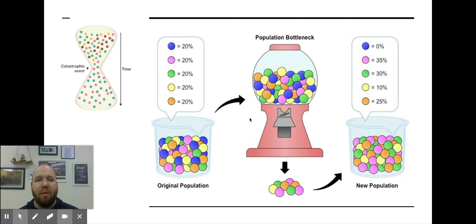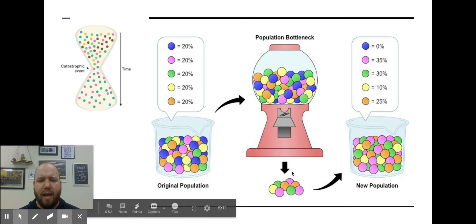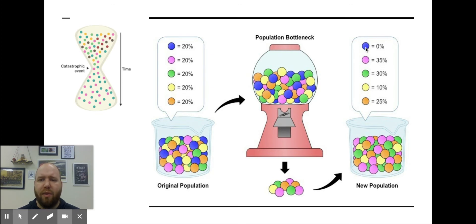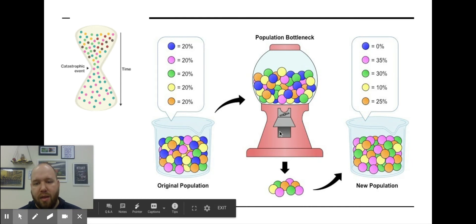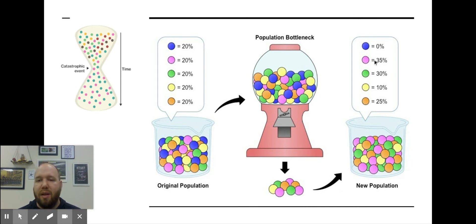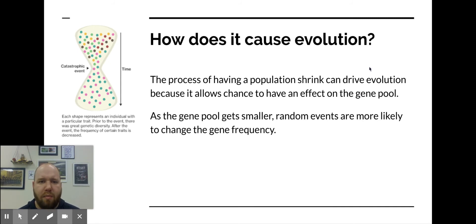The most important thing to remember about shrinking populations is that this is because of random processes. I love this example of gumballs in a gumball machine — they put them all in there evenly, but the ones you get out are by random choice. By random choice, you could miss out on a color or flavor. Some could be overexpressed, some underexpressed, some not expressed at all. If there's a change from the original population that went through this bottleneck to the new population, that change in allele frequency over time is evolution, even though it's happening from a random process.